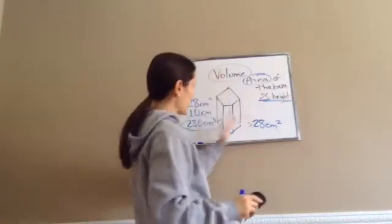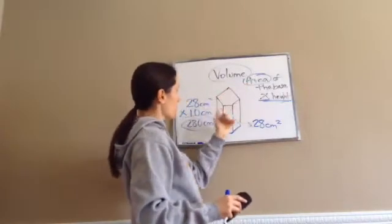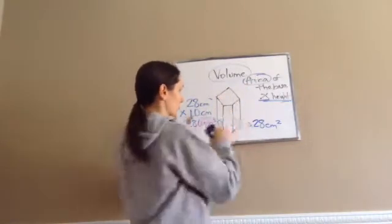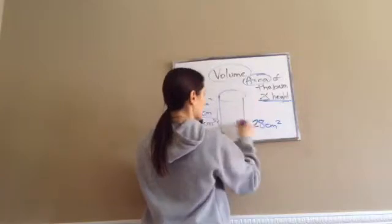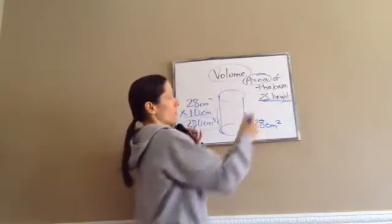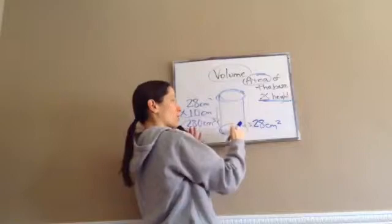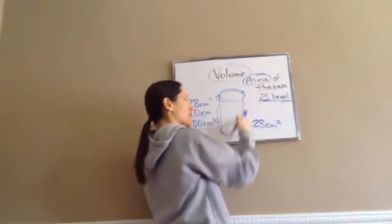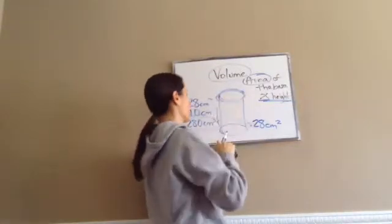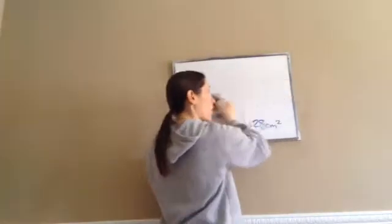If this were a circle — for example a cylinder — you would take the area of the base. The bases are circles, so you take the area of the base and then multiply it by the height. That's how you find the volume of a prism or a cylinder.